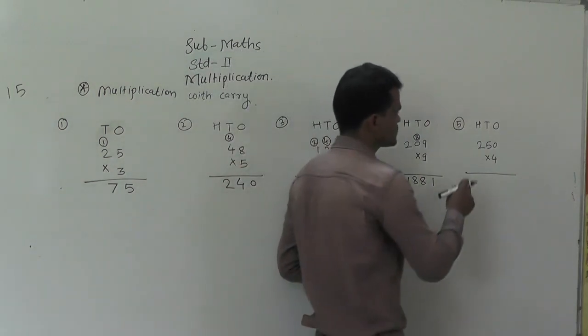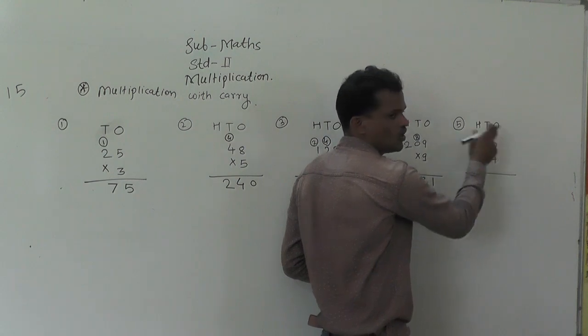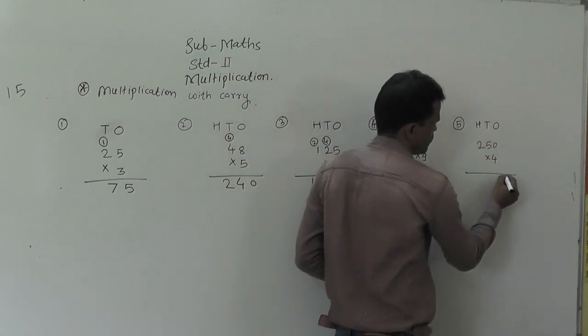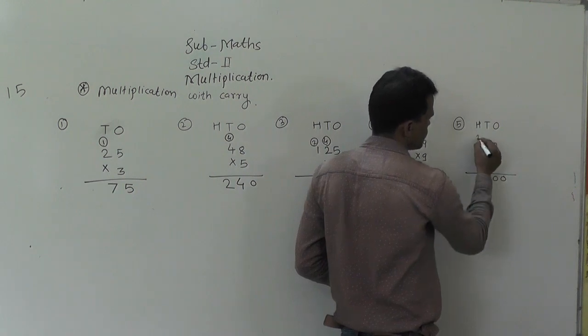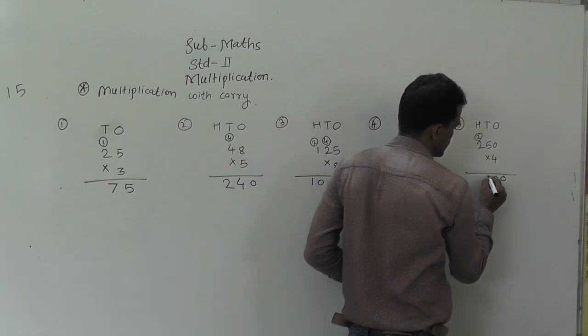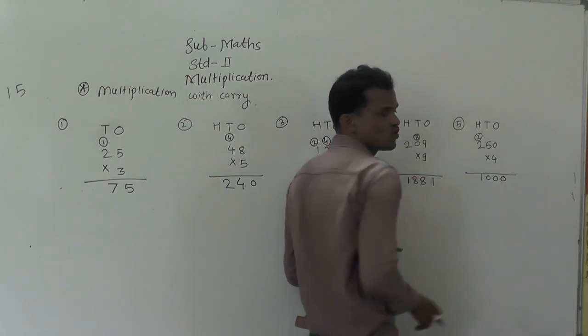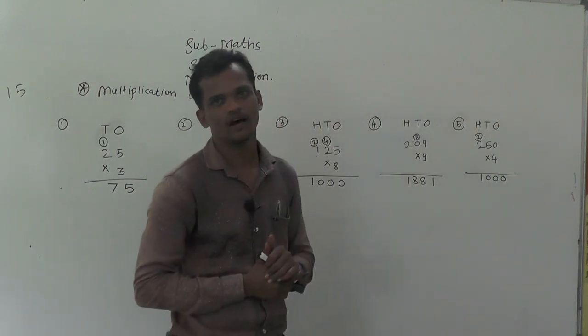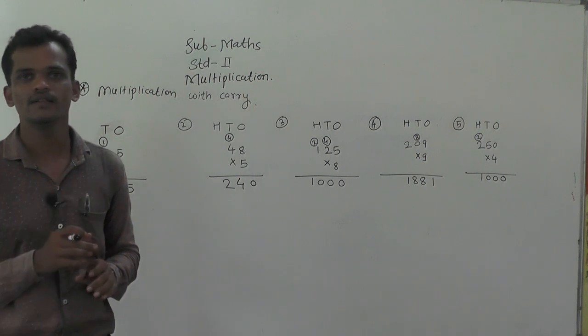Next: 250 multiply by 4. 4 times 0 is 0. 4 times 5 is 20, 0 right here, 2 carry. 4 times 2 is 8, plus carry equals 10.